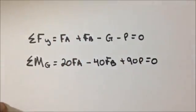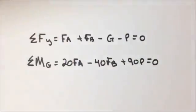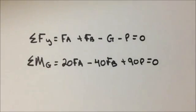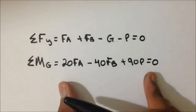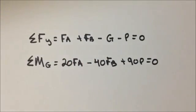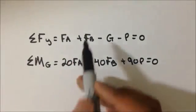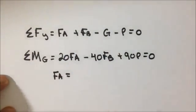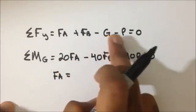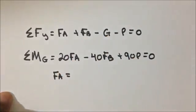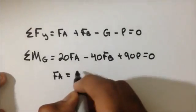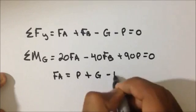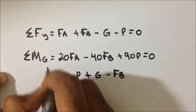We have two equations with two unknowns — FA and FB, which are our support reactions. We will solve algebraically for one variable in the first equation and substitute it into the second. I will solve for FA in the first equation: FA equals P plus G minus FB — moving the other terms to the other side by changing the sign.